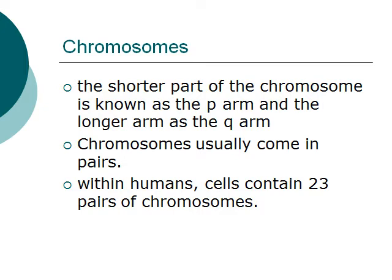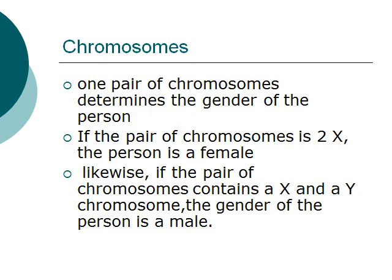Chromosomes usually come in pairs. Within humans, cells usually contain 23 pairs of chromosomes. One pair of chromosomes determines the gender of the person.